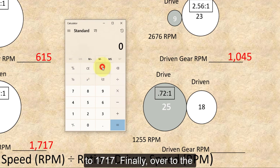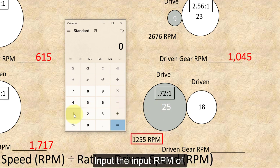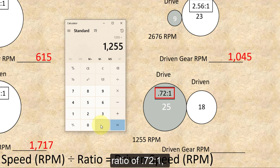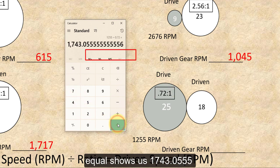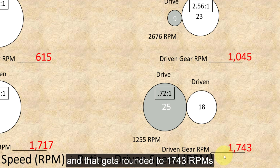And finally, over to the overdrive gear ratio down on the lower right. Input the input RPM of 1,255, and divide that by the overdrive ratio of 0.72 to 1. The equal shows us 1,743.0555, and that gets rounded to 1,743 RPMs.